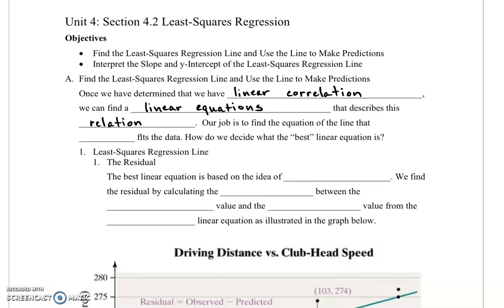Our job is to find the equation of the line that best fits the data. The problem is, how do we decide what the best linear equation is? Well, we use something called the least squares regression line.